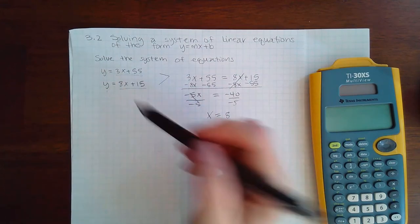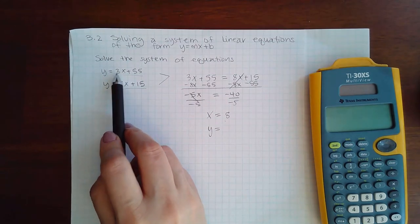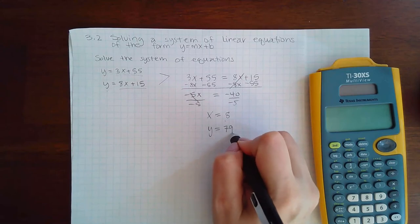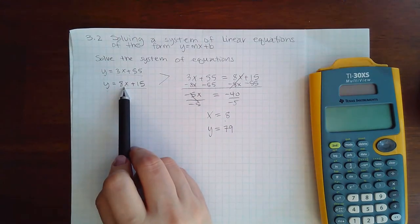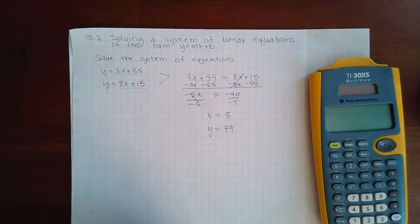3 times 8 is 24, and 24 plus 55 is 79. Or, 8 times 8 is 64, and 64 plus 15 is also 79. So